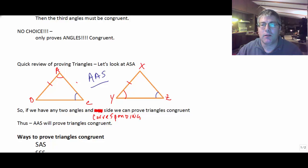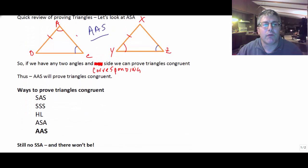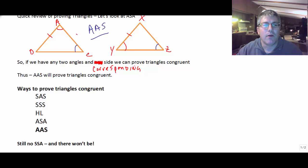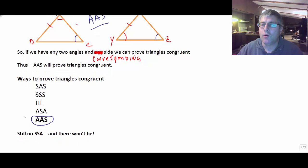So we can add that to our list of reasons for proving triangles congruent. We have side-angle-side, side-side-side, HL, angle-side-angle, and now our new one, angle-angle-side. Notice that side-side-angle is absent from our list. There's no side-side-angle and I promise there won't be. We won't be using side-side-angle to prove triangles congruent.